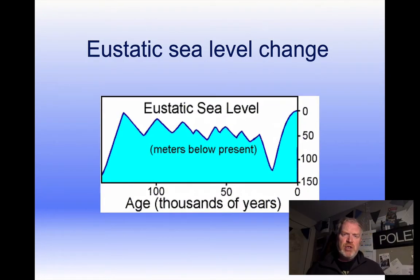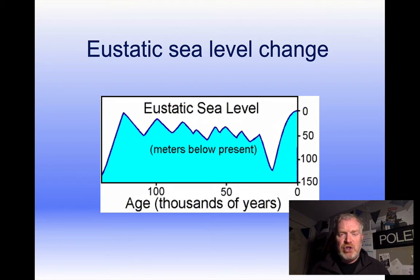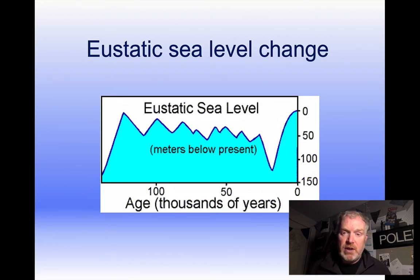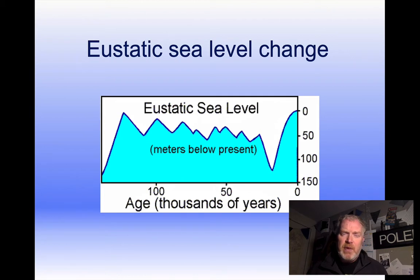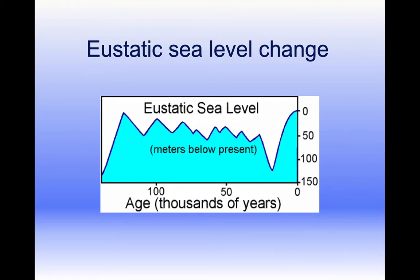Eustatic sea level change, as shown on this fairly crude graph, mirrors the climatic changes we've seen with the 100,000-year temperature cycles. Crucially, we can see that at present we have sea levels as high as they've been in the last 120,000 years, and that will have an effect on the geology of our coasts.